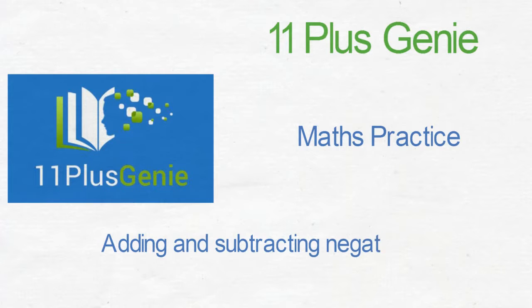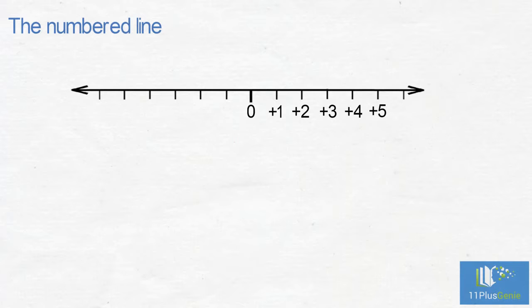Adding and subtracting negative numbers: the numbered line. All of you should be familiar with the numbered line. Just to recap, we have zero in the middle and the positive numbers are to the right of zero. So the positive numbers are positive one, positive two, positive three, positive four, positive five, and so on. The negative numbers are to the left of zero: minus one, minus two, minus three, minus four, minus five, and so on.